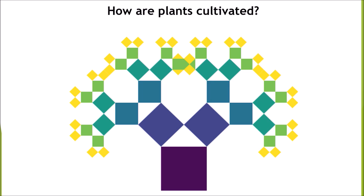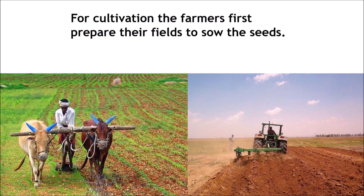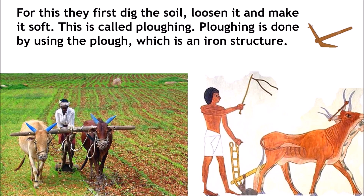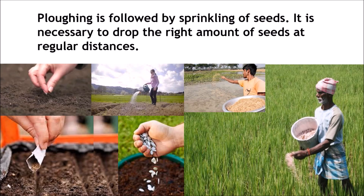How are plants cultivated? For cultivation, the farmers first prepare their fields to sow the seeds. For this, they first dig the soil, loosen it and make it soft. This is called ploughing. Ploughing is done by using the plough, which is an iron structure. These days, ploughing is done with the help of tractors. Ploughing is followed by sprinkling of seeds.